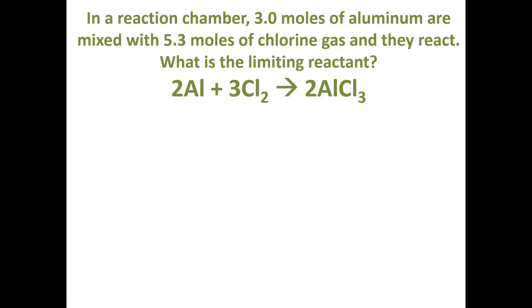In this limiting reactant problem, all we're going to do is identify which reactant, the aluminum or the chlorine gas, is the limiting reactant. The problem reads: in a reaction chamber, 3.0 moles of aluminum are mixed with 5.3 moles of chlorine gas.